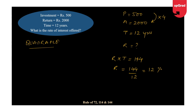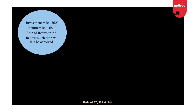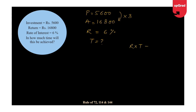Now let's change the question slightly. Principal = 5600, Amount = 16800 — it is getting tripled. This time, instead of time I know the rate of interest and need to find the time. Using Rate × Time = 114 (since it's triple), and the rate of interest is 6%, Time = 114 ÷ 6 = 19 years. That's it! Such an easy approach.